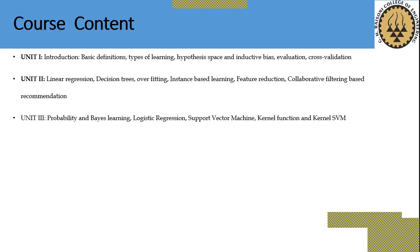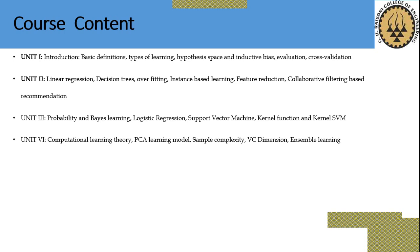In Unit 3, we will move to probability and Bayesian learning, logistic regression, support vector machines, and kernel functions — these are the core machine learning algorithms where we will see in depth how to implement them. Unit 4 covers computational learning theory, the PAC learning model, sample complexity, VC dimension, and ensemble learning.